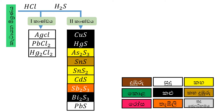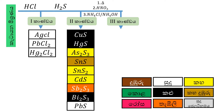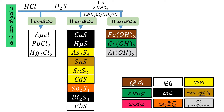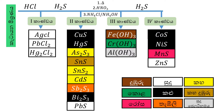Here we have nitric acid, ammonium chloride, and ammonium hydroxide. Here we have A0. Here is with H2S. Here we have A0.